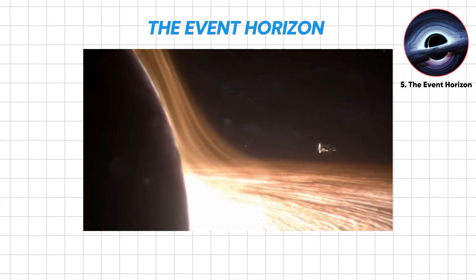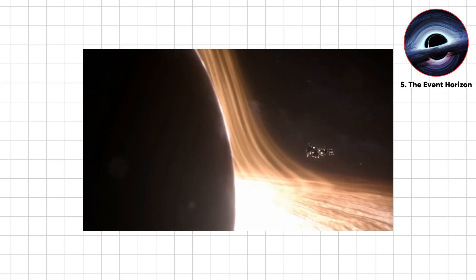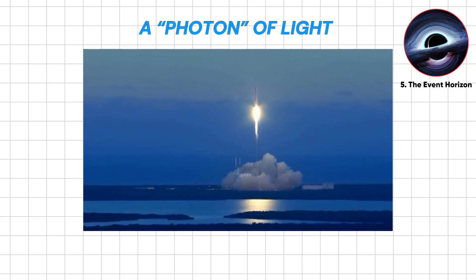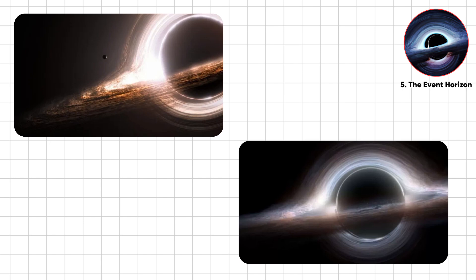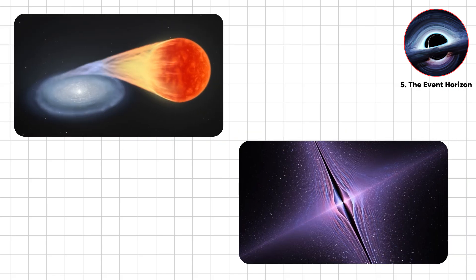The Event Horizon isn't just another boundary, it's the universe's ultimate point of no return. Once you cross, gravity becomes so intense that not even a photon of light can escape. From afar, you'd appear frozen there forever thanks to the phenomenon known as cosmic time dilation, a cruel illusion that makes it look like you're forever caught on the edge.